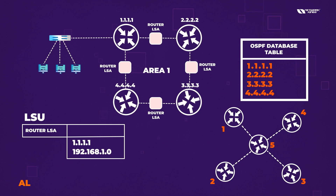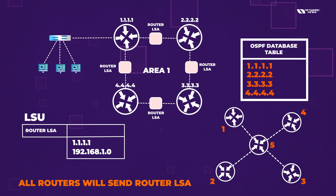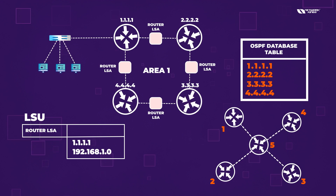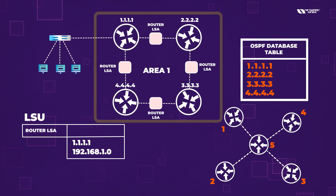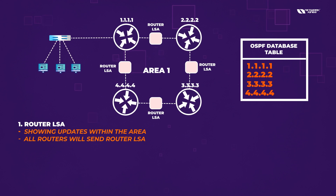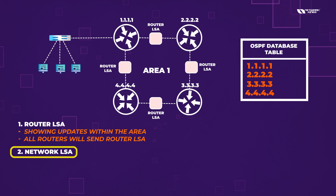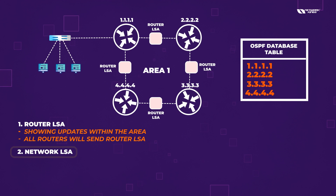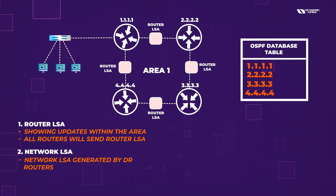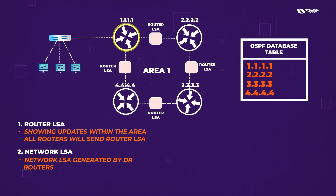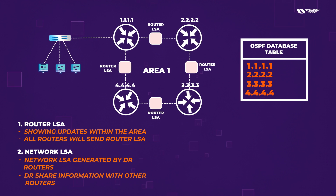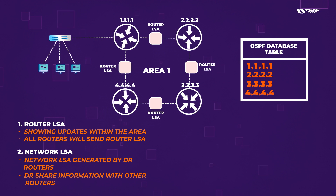So this is called Router LSA — all routers send Router LSA, and inside it you have the router ID and internal router information, including the different subnets or networks. The second LSA is called Network LSA. All these routers are going to maintain a table called the Network LSA table. The Network LSA is generated by the DR (Designated Router), and it contains the router ID of the DR. The DR shares information with other routers — you update to the DR, and then the DR updates to other routers.